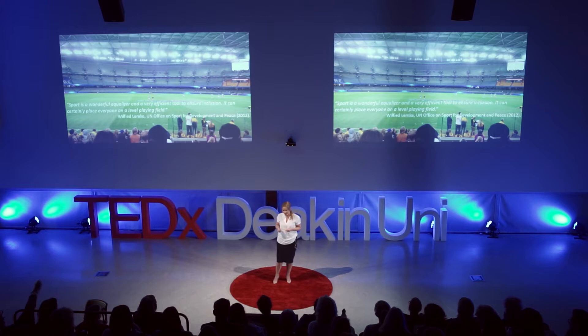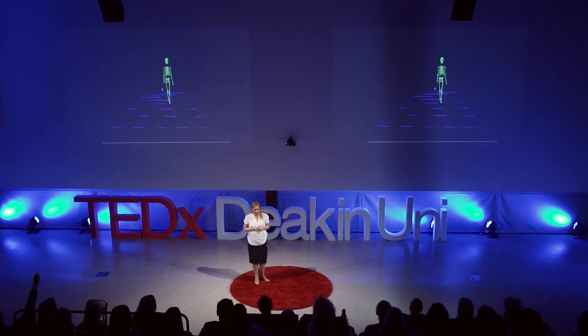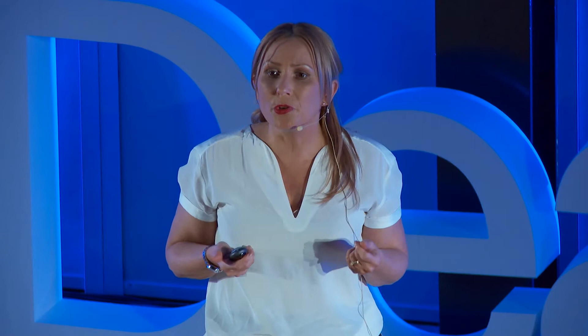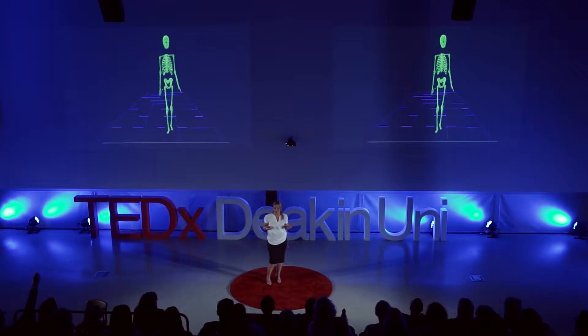Here we have a typically developing child walking. What you'll notice is that this typically developing child has a nice smooth and coordinated gait. Next, we have a child who has Asperger's disorder. What you'll notice here is some very subtle upper body postural abnormalities — it's not quite as smooth as the typically developing child in gait.